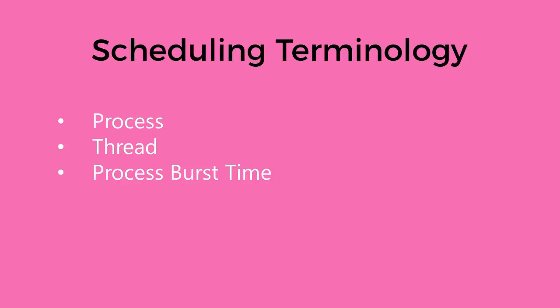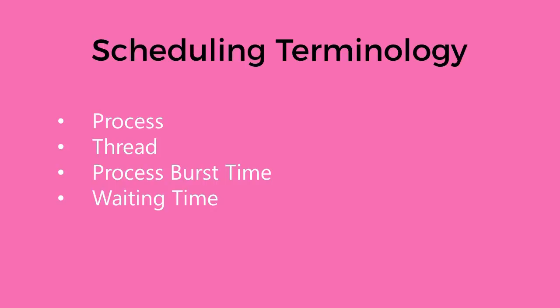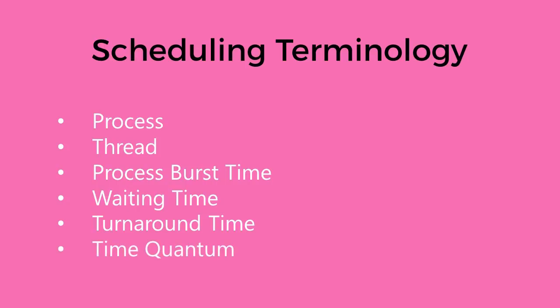Process burst time is the time required to complete the execution of a process. Waiting time is the time a process waits after arrival until it starts getting executed. Turnaround time is waiting time plus burst time, and a low turnaround time is usually desirable — it is the total time taken between the submission of a process and the return of complete output to the user.